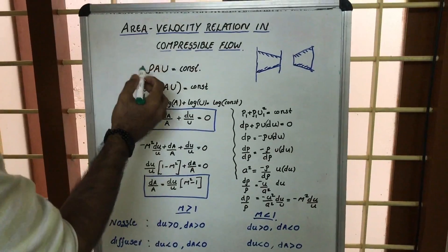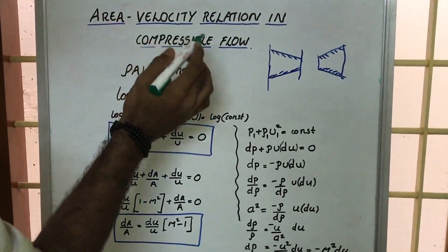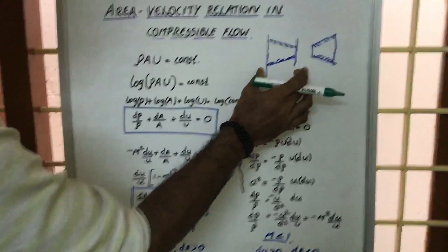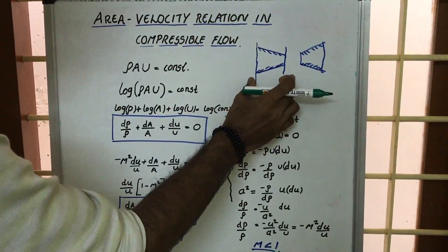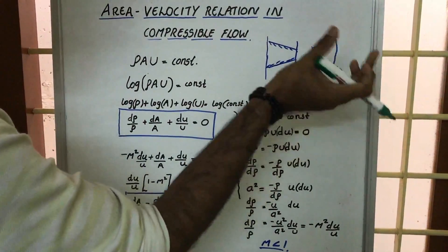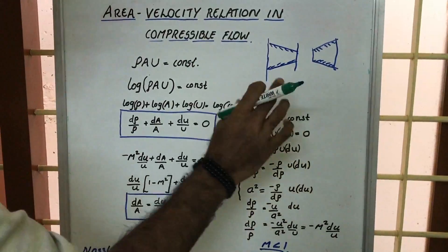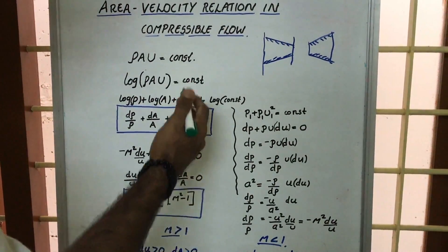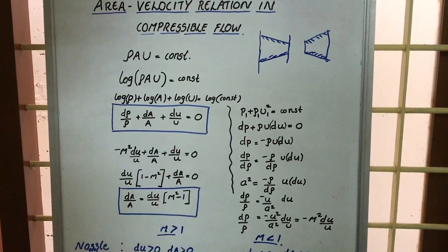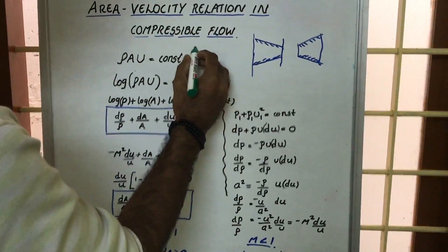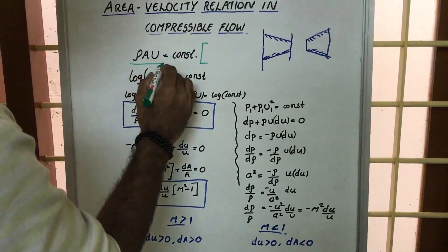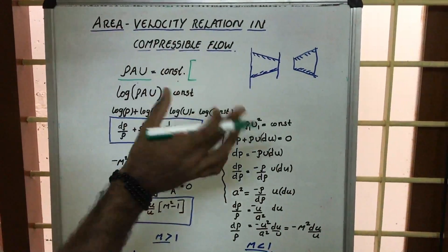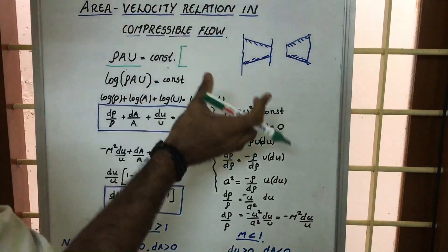In this lecture we are going to discuss the area-velocity relation in compressible flow. We know that the shape of the nozzle and the shape of the diffuser we require all depends upon this equation. So we have to look at how to derive that equation. First, we have to consider the mass flow rate equation — it is the first fundamental equation of compressible flow.